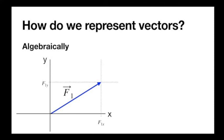So how do we represent f in terms of x and y components? How far does it extend in x and how far does it extend in y? That alone is enough information to describe the vector. The x component is just its length in the x direction, and the y component is its length in the y direction. We often write it like this: f1 is (f1x, f1y) in parentheses — just like labeling a point on a graph — describing the vector by where its endpoint is with respect to the origin.